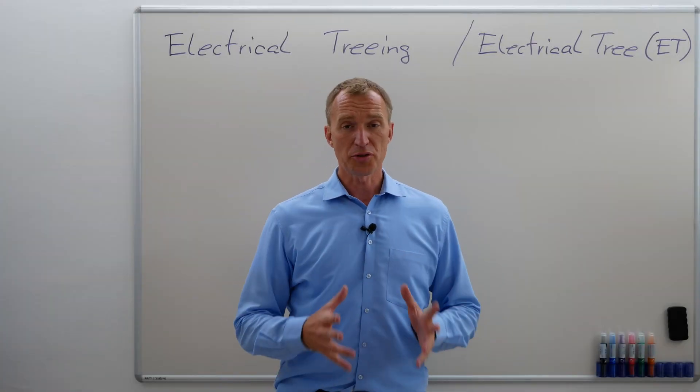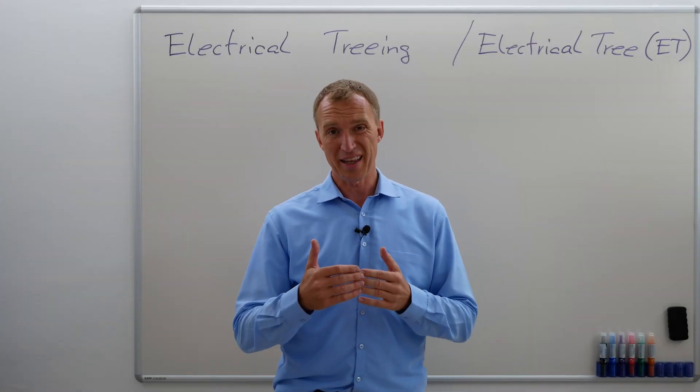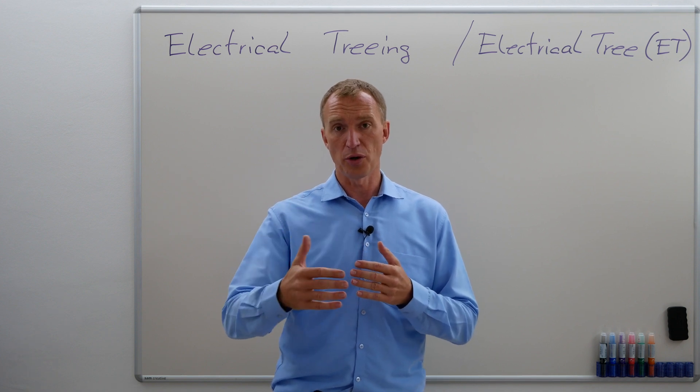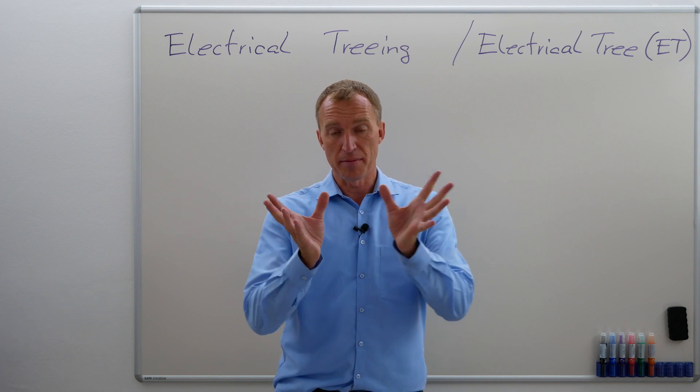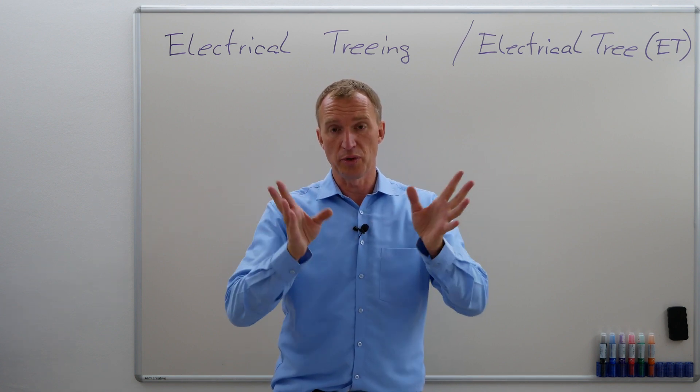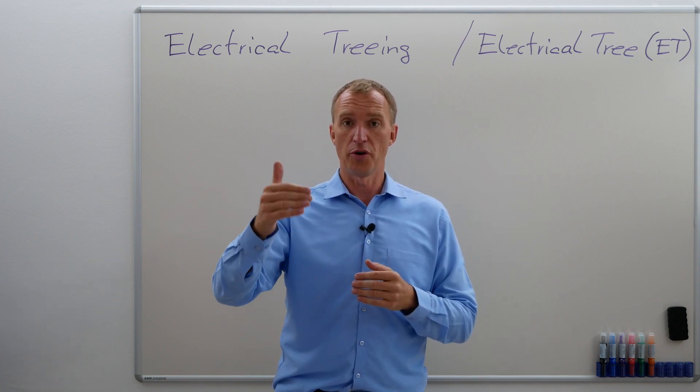What is electrical treeing? Electrical treeing is a partial discharge that creeps or grows into a solid insulation material and usually creates multiple branches in order to reach out and grow further and further.